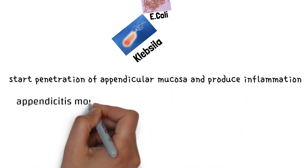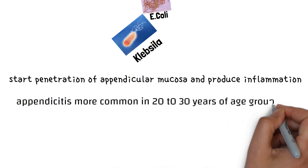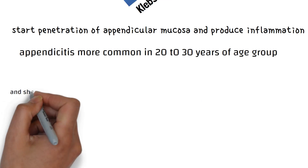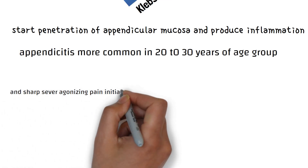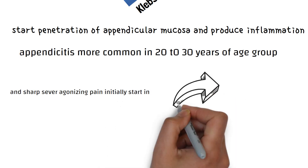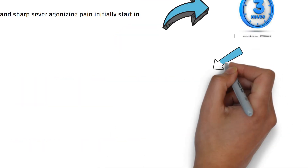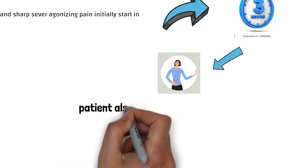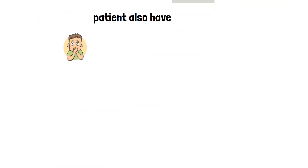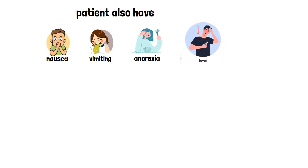Appendicitis is most common in the 20 to 30 years age group. Sharp, severe, agonizing pain initially starts in the umbilical region for the first 3 hours and then shifts to the right iliac fossa. Patients also have nausea, vomiting, anorexia, and fever.